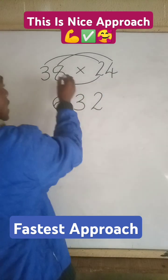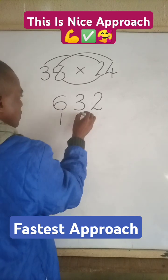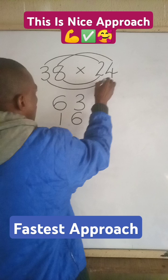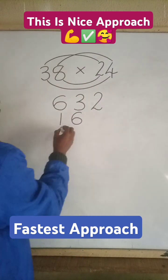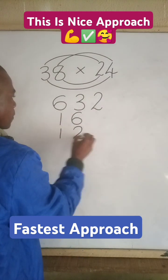So I will write the 16 here. Now 3 multiplied by 4 will give us 12. So I will write the 12 here.